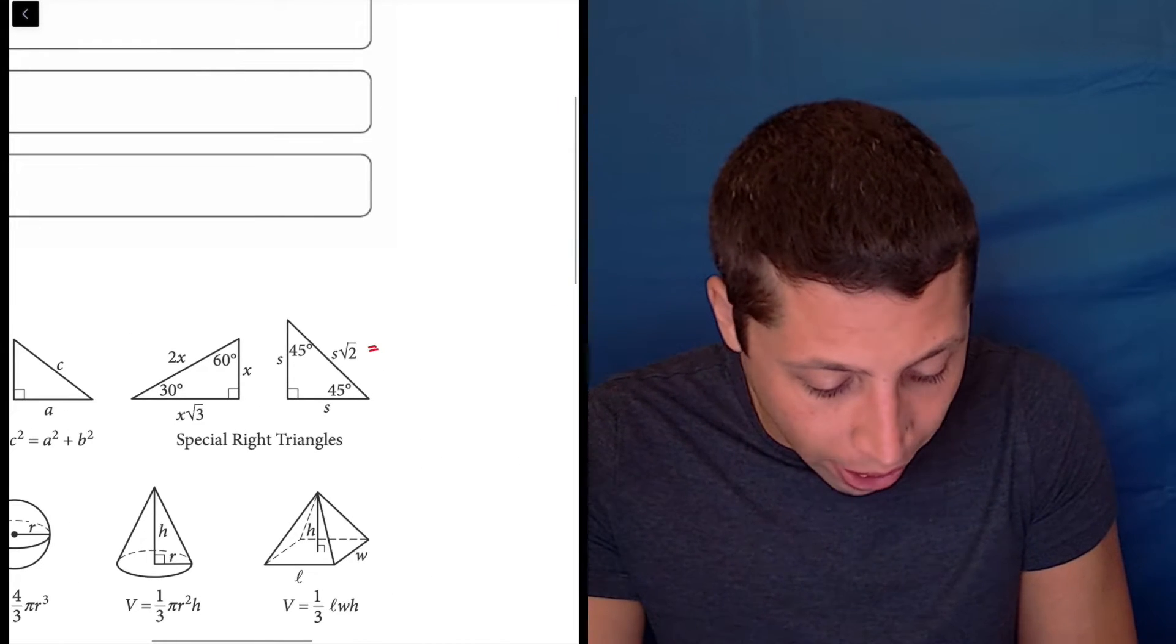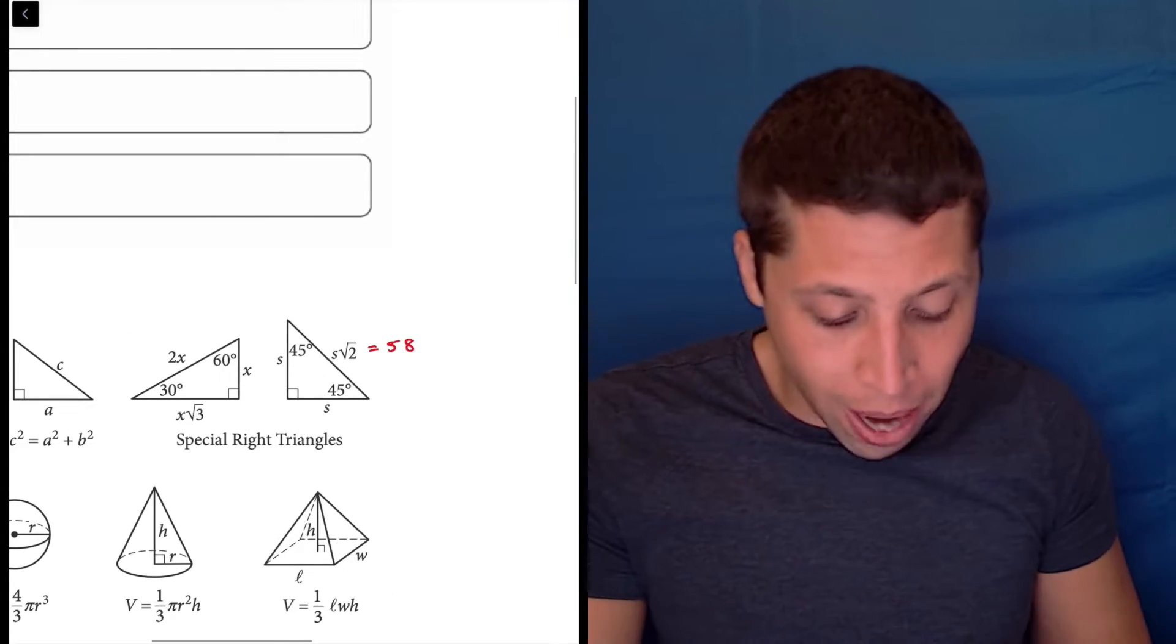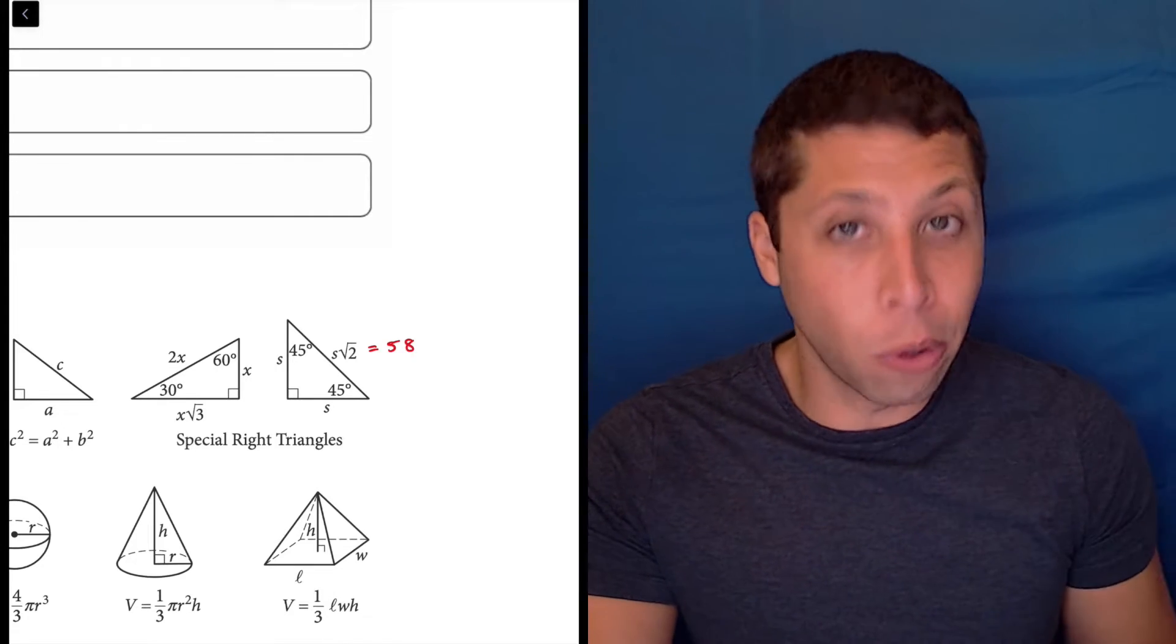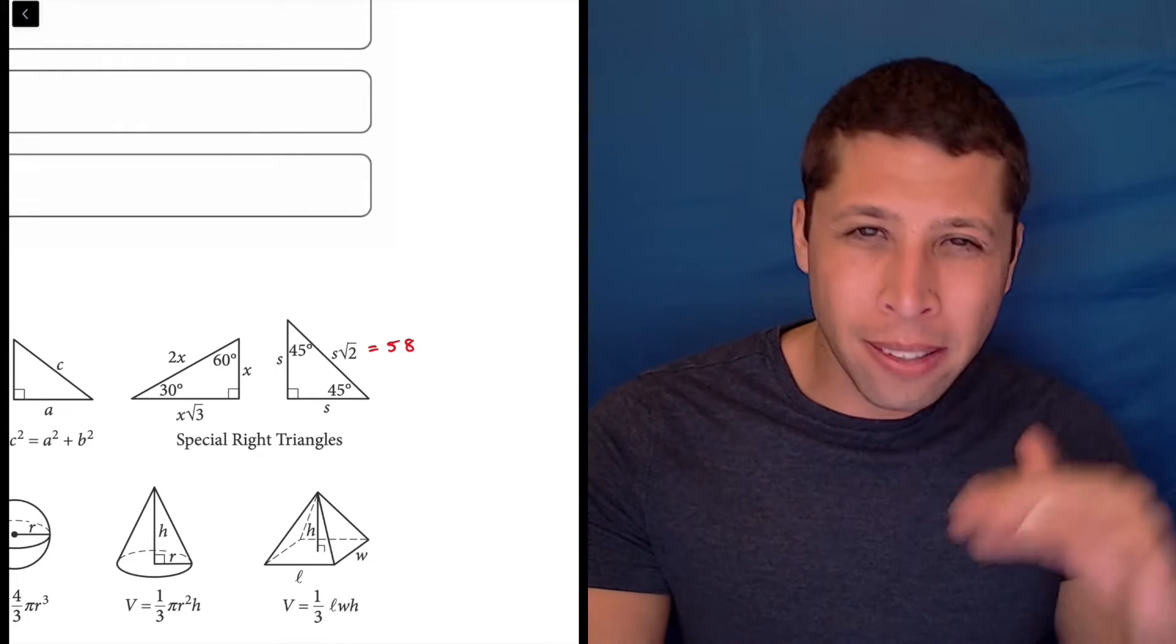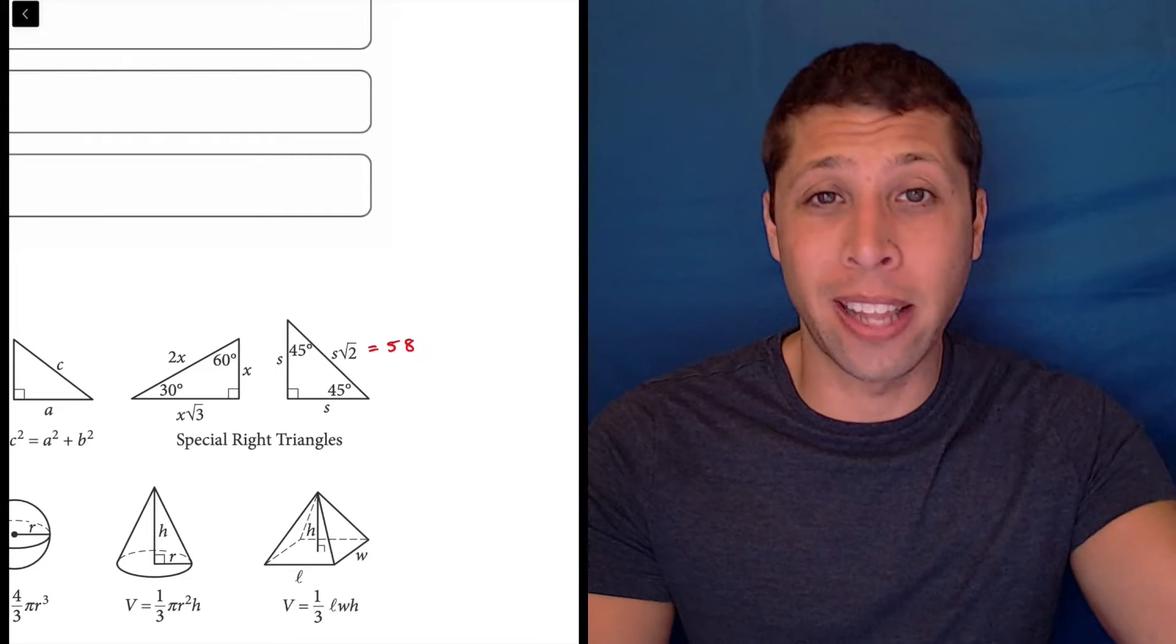We can go in here and we can just say, okay, s radical 2 is equal to 58. That means that seems a little messy, right? That radical 2, what happens to that?